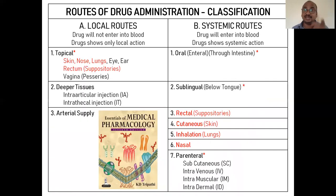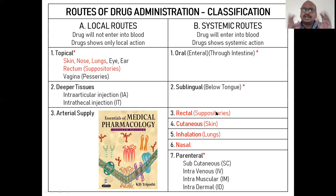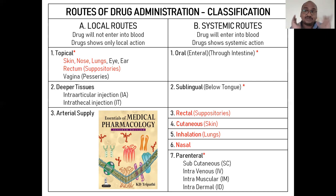All these points are very important. Here we can see the classification as per the pharmacology book — the seventh edition of KD Tripathi. Local routes are classified into topical route, deeper tissues, arterial supply, and oral route. Systemic routes include sublingual, rectal, cutaneous, inhalation, and nasal. Some routes marked with a red line are used for both local as well as systemic delivery — for example, suppositories, cutaneous patches, and nasal sprays.